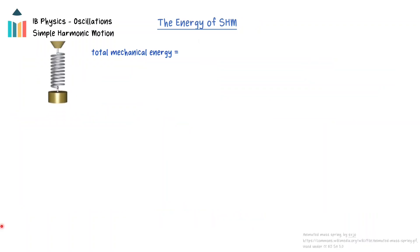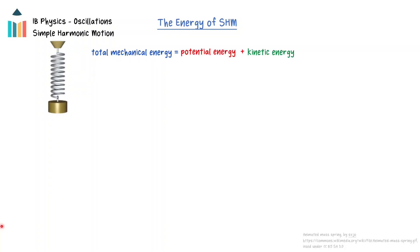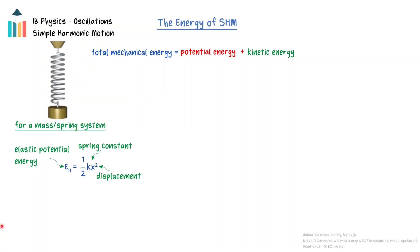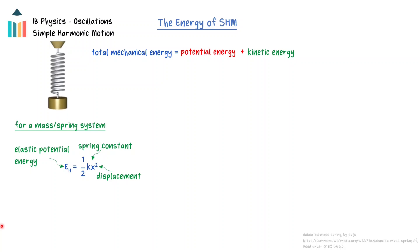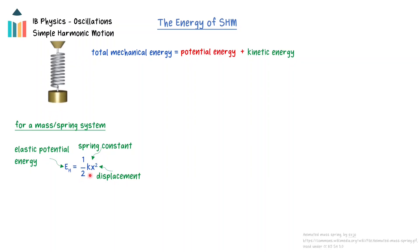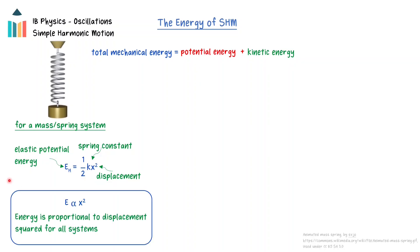The total mechanical energy of a mass undergoing simple harmonic motion is the sum of its potential energy and kinetic energy. As the mass oscillates, the mechanical energy is being converted from kinetic to potential and back again. The type of potential energy that the system has will depend on the system. For a mass-spring system, it will be elastic potential energy. Elastic potential energy is given by the equation: elastic potential energy = one-half times the spring constant times the displacement squared. The energy is proportional to the square of the displacement.